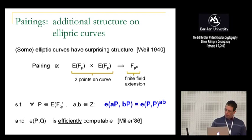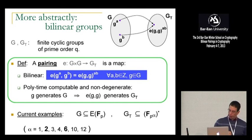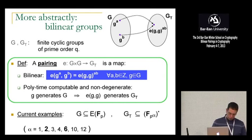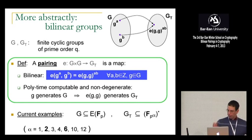We're going to abstract away from elliptic curves now and talk more abstractly about bilinear groups. The nice thing about this setup is you can do a lot of work in pairing-based crypto without knowing too much about elliptic curves, just using the abstraction. What is a bilinear group? Basically you have a group G, which we call the source group, and a group GT, which we call the target group. The pairing takes two points in the group G and maps them into one point in the group GT in such a way that the map itself is bilinear — these exponents come out of the parentheses. And more importantly, it's computable and non-degenerate.